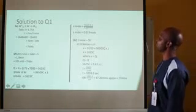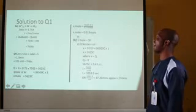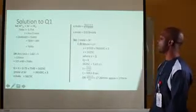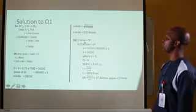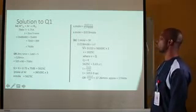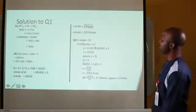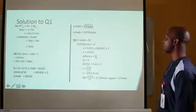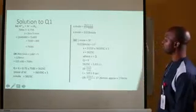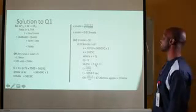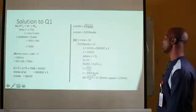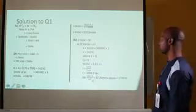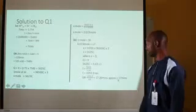For part (b): 0.019 moles corresponds to x Faradays. Solving gives x = 5,625 coulombs. Since Q = IT and we are looking for time, making T the subject: T = Q/I = 5,625 / 5.43 = 1,035.9 seconds. Converting to minutes by dividing by 60 gives 17.26 minutes, approximately 17 minutes.